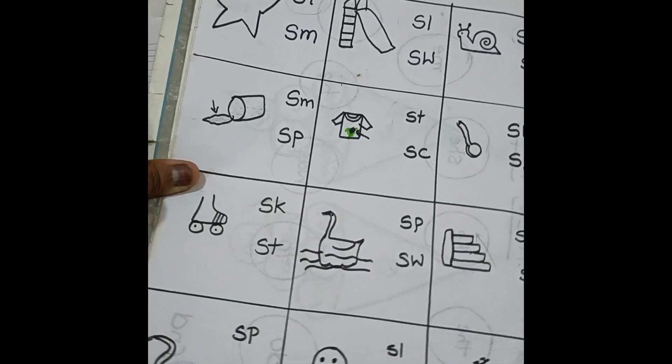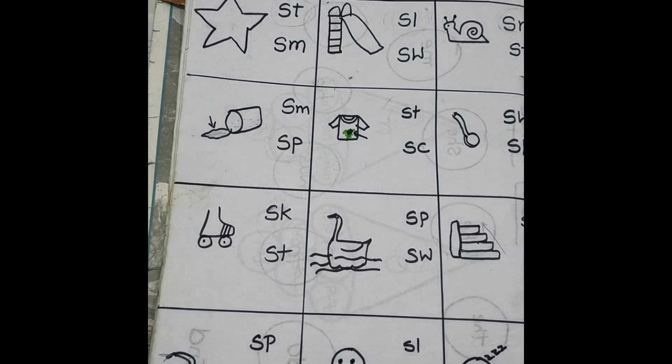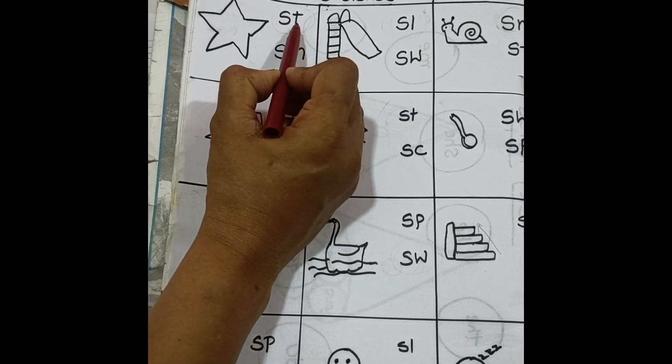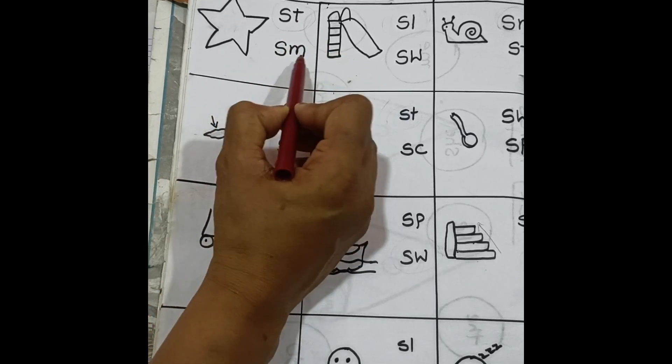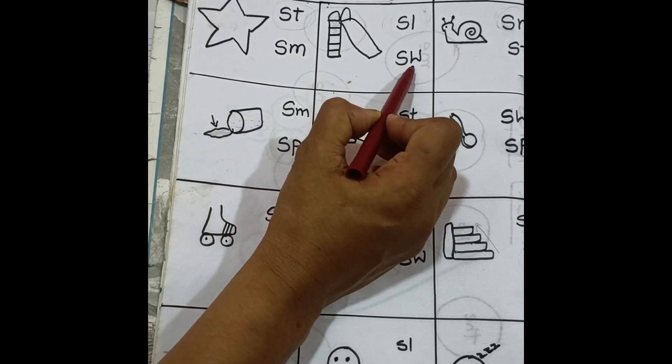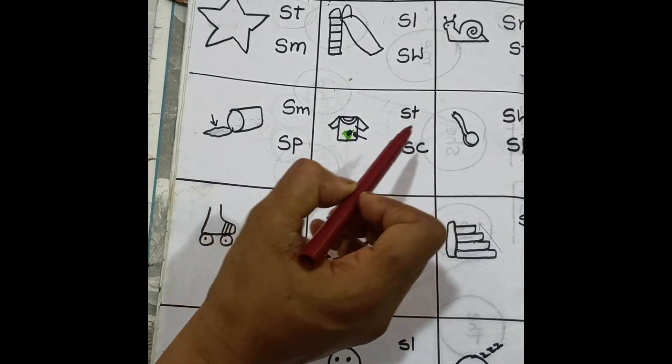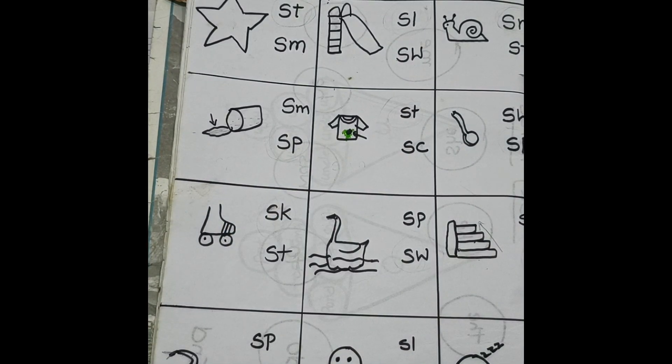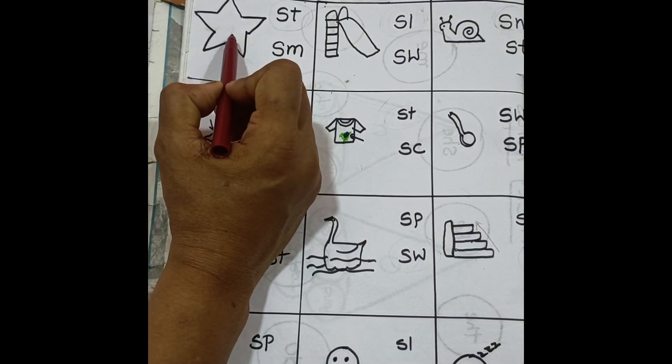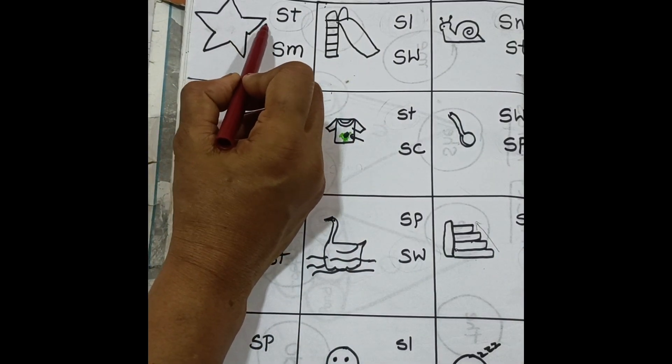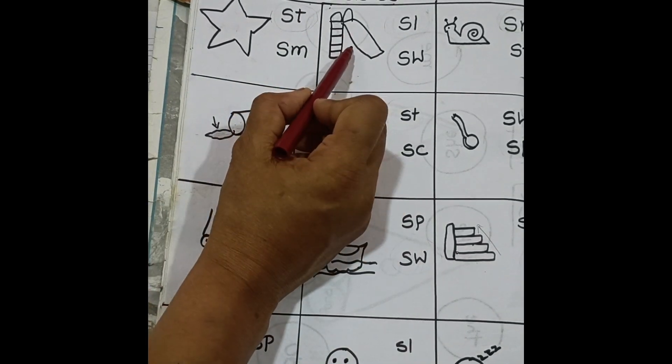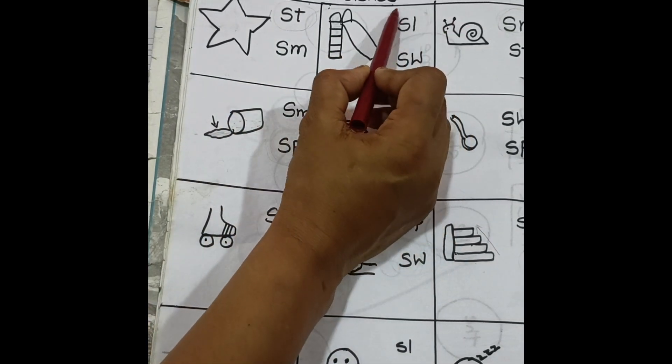And the next one is s-blends. S-blend worksheet. This one st, sm, st. Already we have taught them st, sm, sw, sp, sc, sw, all these sounds. Just they need to identify the beginning sound. What is this? Star. St, st, star. Circle the correct blends. Slide. Sl, sl, sl, slide. S-L. Sn, sn, snail. S-N.